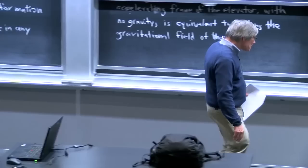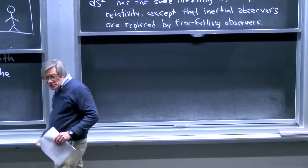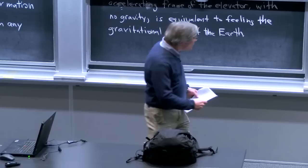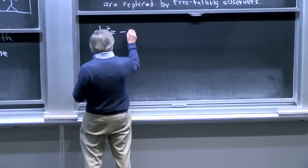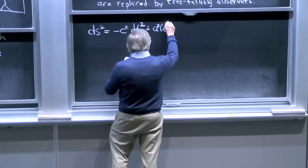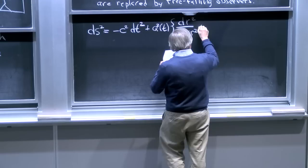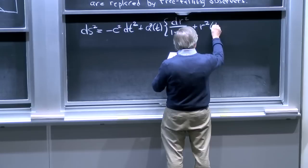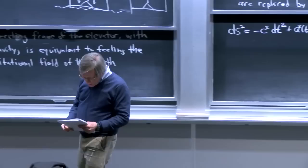Our next goal is to figure out how time enters the Robertson-Walker metric to give us the space-time metric instead of just a spatial metric. I'm going to write down the answer and then describe why it has to be right. When we incorporate time, ds² becomes: minus c² dt² plus a²(t) times [dr²/(1 − kr²) + r²(dθ² + sin²θ dφ²)].